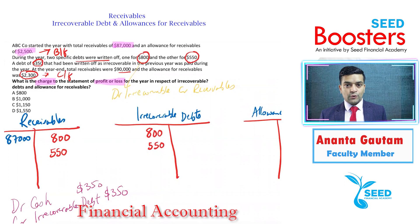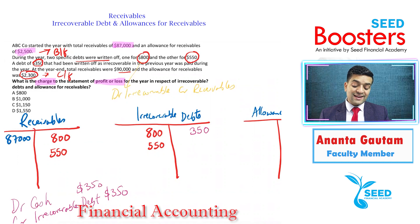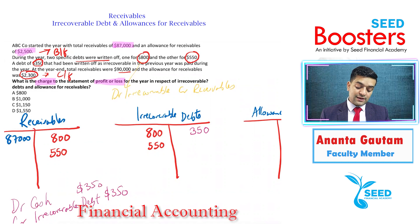If any debt written off in the previous year is recovered, the double entry is debit cash, credit irrecoverable debts. At the year end, total receivables were 90,000, so the carry-forward figure is 90,000.